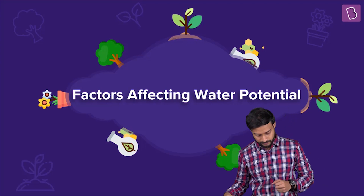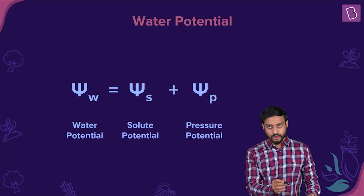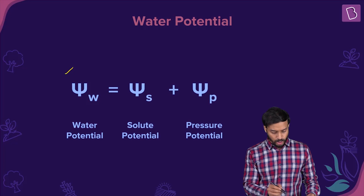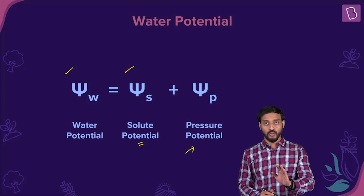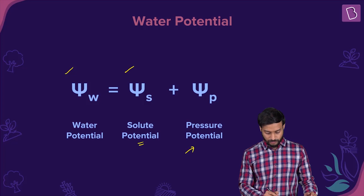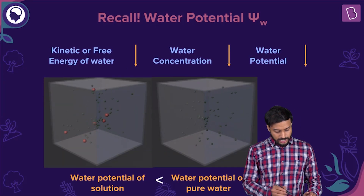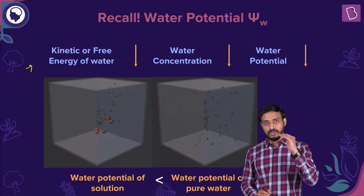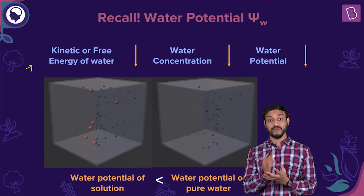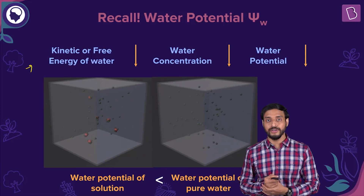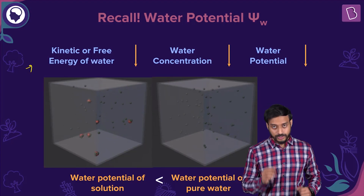As and when you are increasing the amount of solute, the water potential is decreasing — that's the basic concept. Water potential is represented as ψw, which equals ψs (solute potential) plus the pressure potential. I will explain what pressure potential is. Recall: kinetic energy will reduce with addition of solute. Kinetic energy will reduce, concentration will reduce, water potential will reduce as and when you are increasing the amount of solute added to the solution.